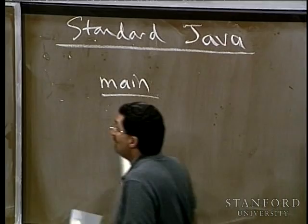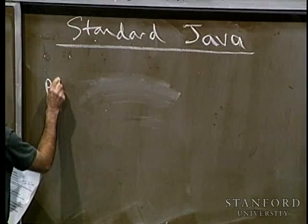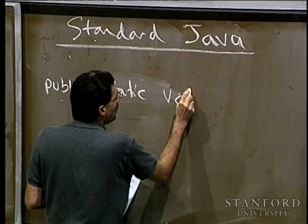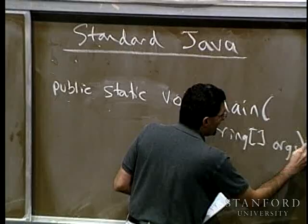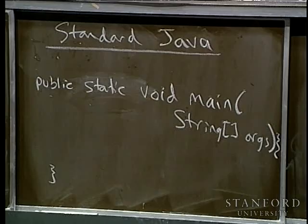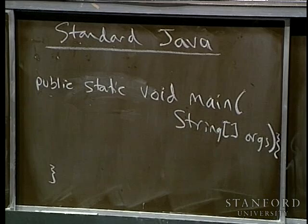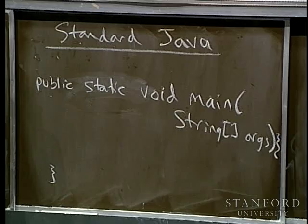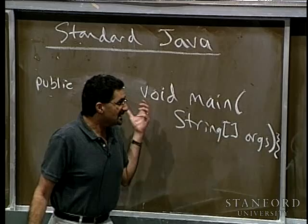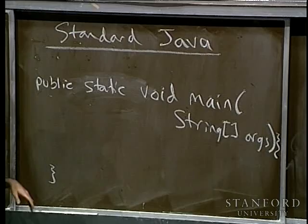The header for the main method is also a bit weird, which is part of why we never showed it to you before. It is: public static void main, with an array of Strings called args as arguments. Public means it's a public method. Static means this method belongs to the class — you'd never call x.main on some object. Main just gets called as a class method, not on an instance. Void means it returns nothing.